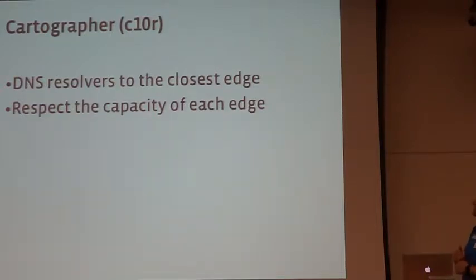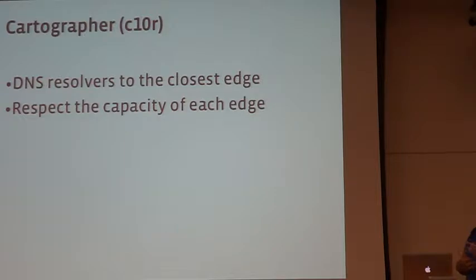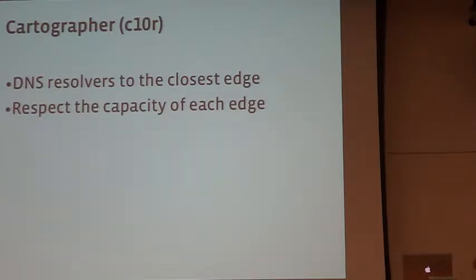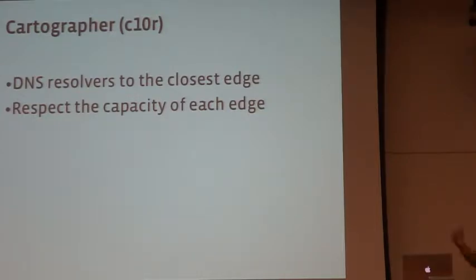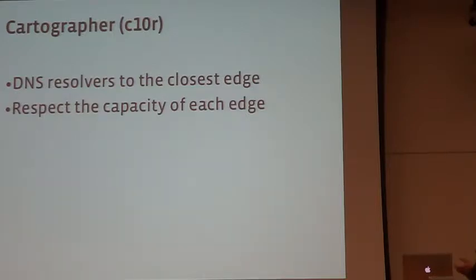So we started building this solution. We have all the DNS resolvers — each provider has a few resolvers — and we try to create a big map of them and attach them to the edge box. Cartographer has a big vision of all the clusters and knows how much capacity each can have and how much capacity is being used.